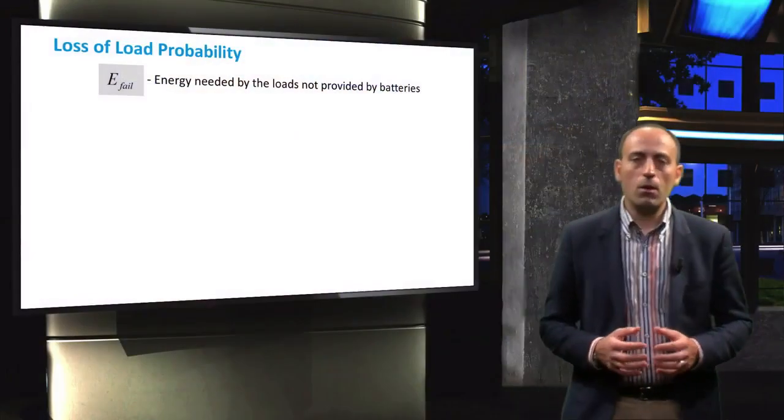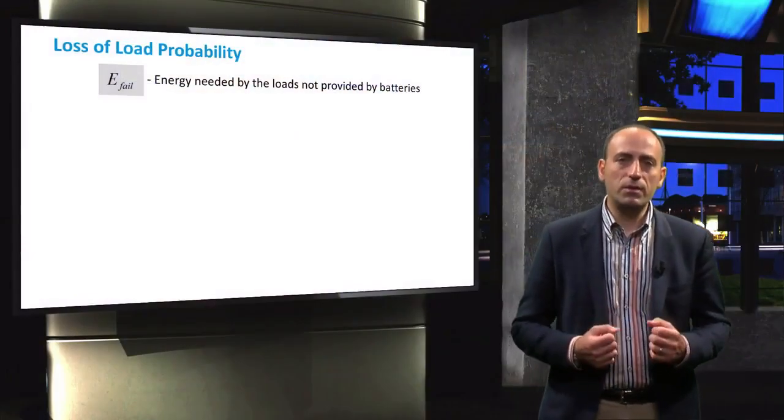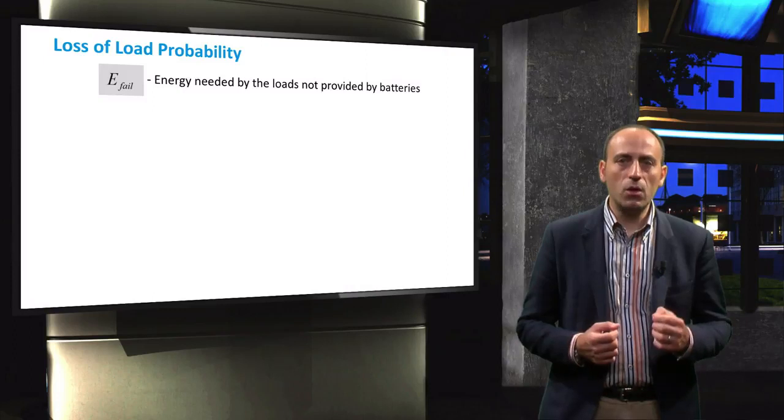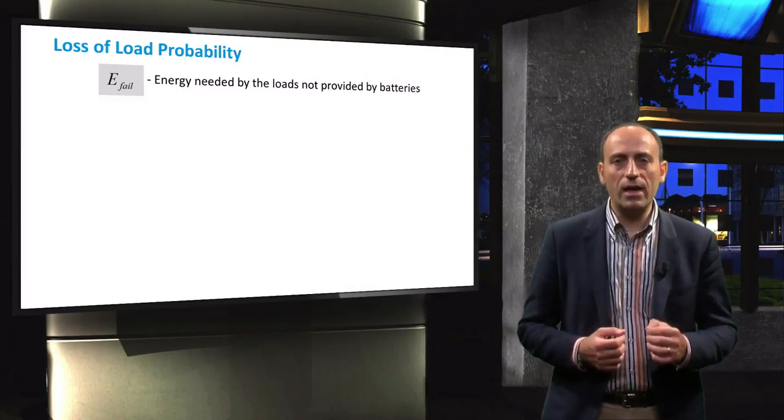One of the crucial concerns during PV system design is reliability. The reliability of a grid-connected PV system will always be 100% as long as the electricity grid is stable. However, a standalone PV system is only reliable until the batteries run out. Sizing the battery bank is therefore a crucial step in the design of standalone PV systems. To quantify the PV system reliability, we use the loss of load probability or LLP.